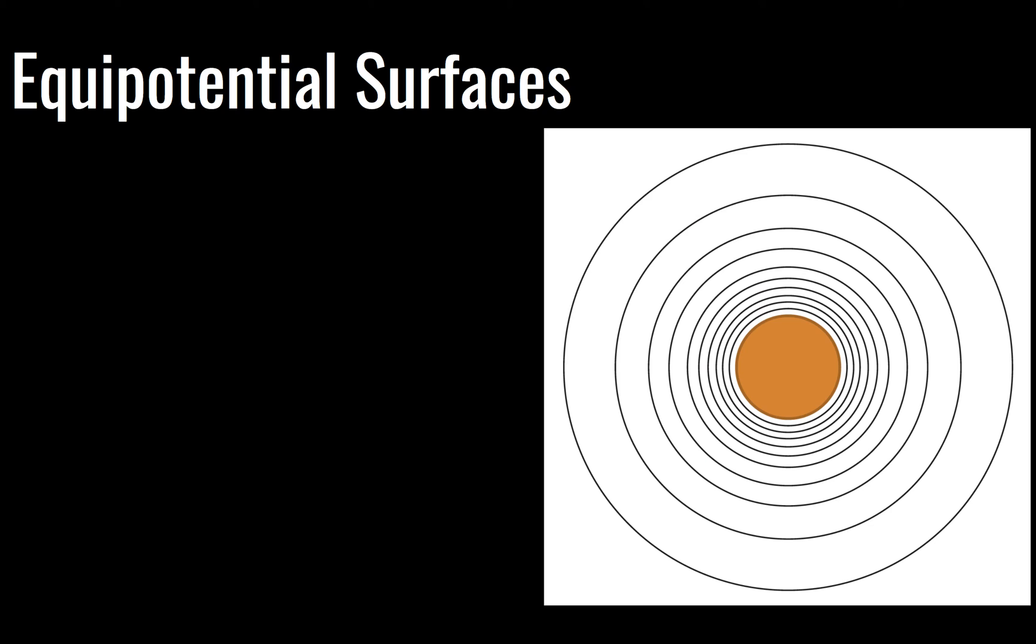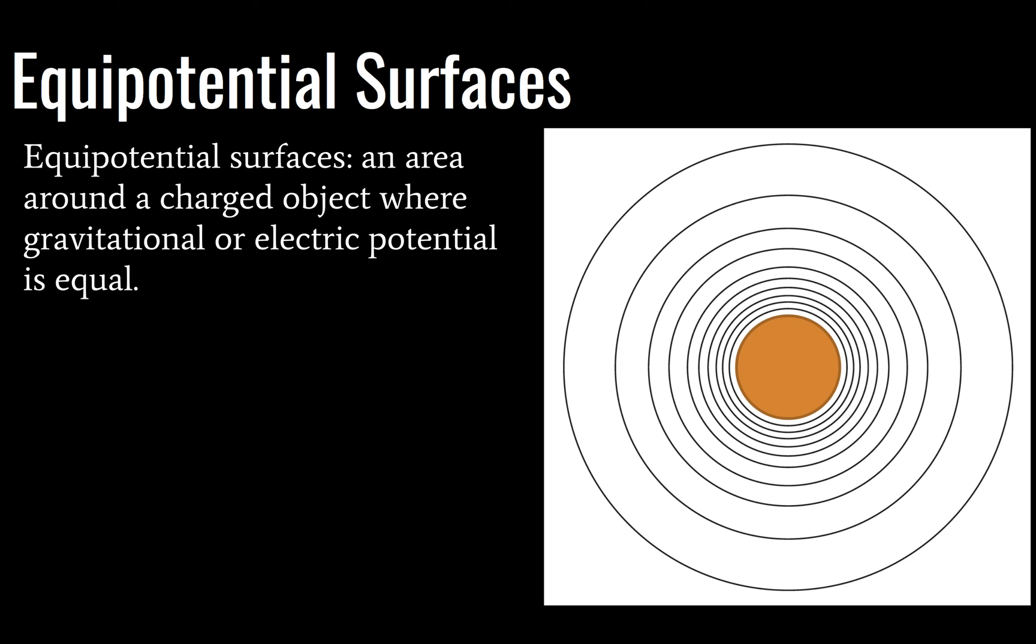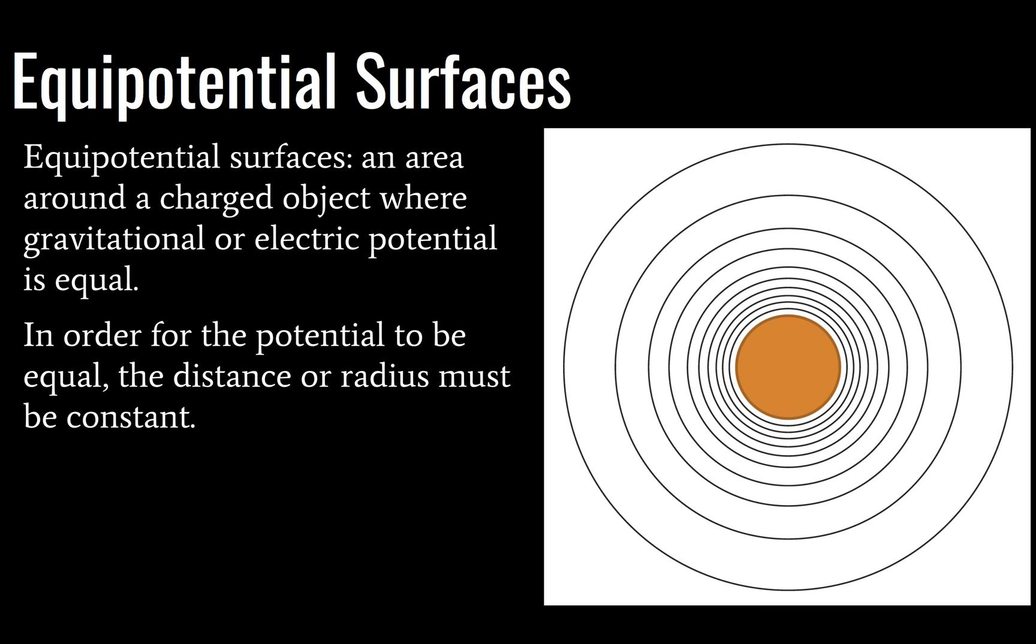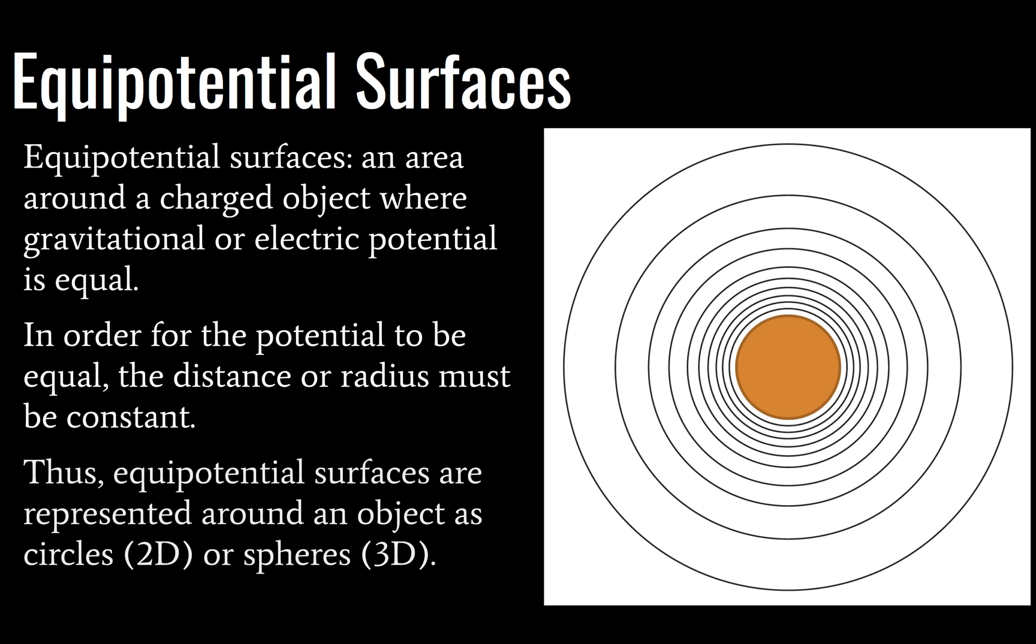So first we need to define our equipotential surfaces, and they are just an area around a charged object where gravitational or electric potential is equal. So what that means is that the distance from the object needs to be constant. So the representation of an equipotential surface is usually going to be given as a circle or a sphere for round objects.